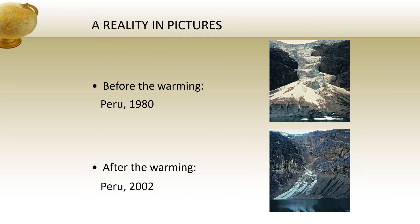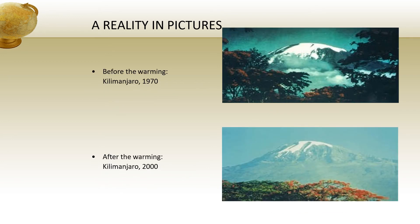Now a reality in pictures. Before global warming in Peru in 1980 you can see picture one, and after the warming in Peru in 2002 you can see picture two — in the first there is lots of ice, in the second all ice has melted. Another example is Kilimanjaro in 1970, where ice caps are present, and Kilimanjaro in 2000, where you can see the change clearly. This is due to global warming.